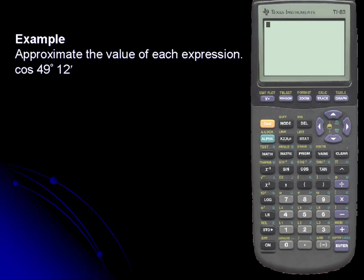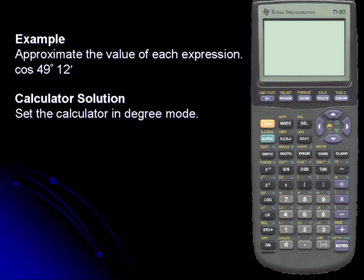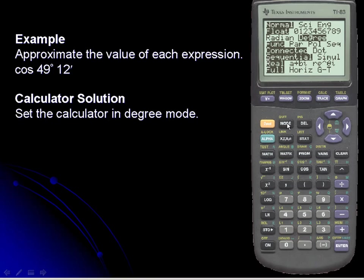Let's approximate the cosine of 49 degrees, 12 minutes. Let's take a look at the calculator solution. First we'll set the calculator to degree mode, so I'll simply enter the mode area of our calculator.